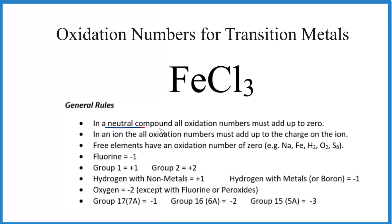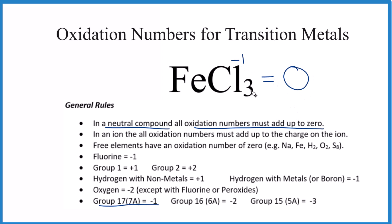If we have a neutral compound — one that has neither a negative nor a positive charge — everything adds up to zero. For chlorine (Cl), which is in group 17, it's usually going to be negative one. So in FeCl₃, three times negative one is negative three, which means the iron has to be positive three. These add up to zero, so the oxidation number on the iron in iron(III) chloride is positive three.